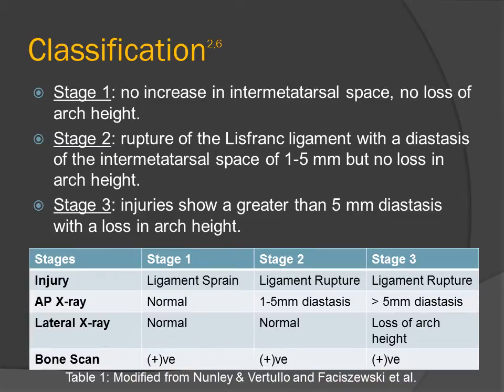In 2002 the Nunley et al. classification system began being used. Stage one is typically a sprain and you will not see any losses in the arch height and no distance in the space of the metatarsals. Stage two shows a disruption in the space between the first and second metatarsals but no loss in arch height. Stage three results in diastasis and a loss of arch height. The table at the bottom lays out the different stages in relation to imaging techniques used to diagnose Lisfranc fractures.